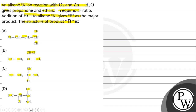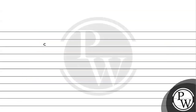What we have here are ozonolysis products — ethanol and propanone in equimolar ratio. The key concept is the ozonolysis reaction. We know that if we know the products given, we can identify the alkene. We know the structure of propanone.